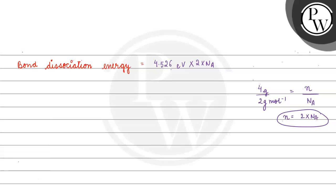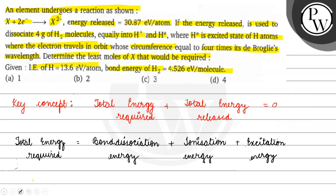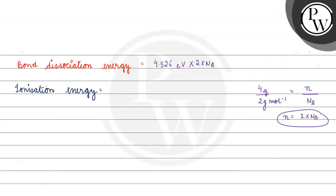Next, for ionization energy: the question gives ionization energy of hydrogen = 13.6 electron volt per atom. The number of atoms is 2 × Nₐ (from 2 moles of H₂ giving 2 moles of H atoms after dissociation). So ionization energy contribution = 13.6 eV × 2 × Nₐ.